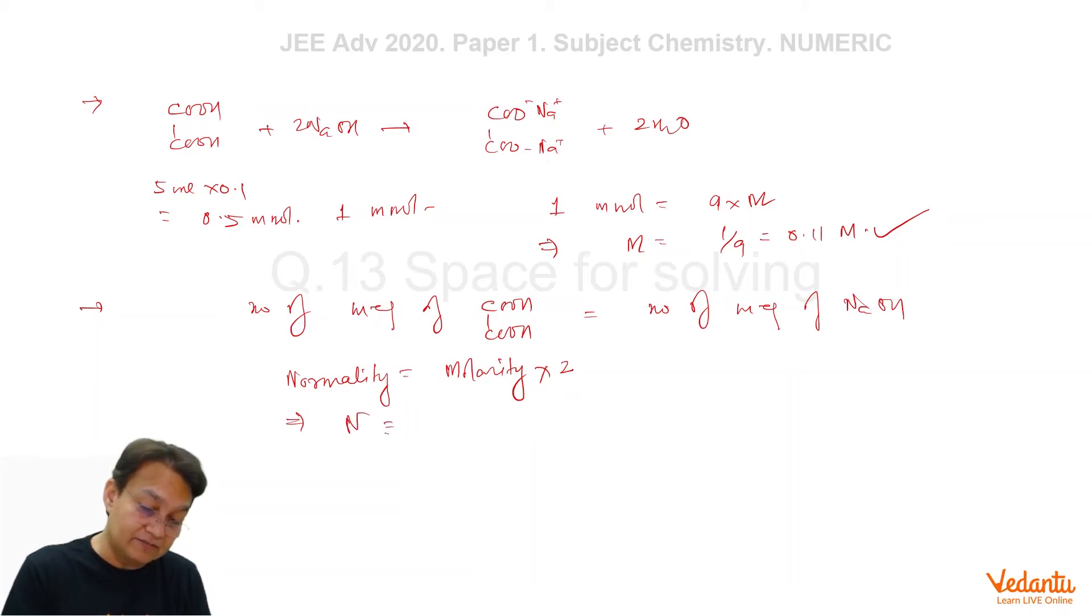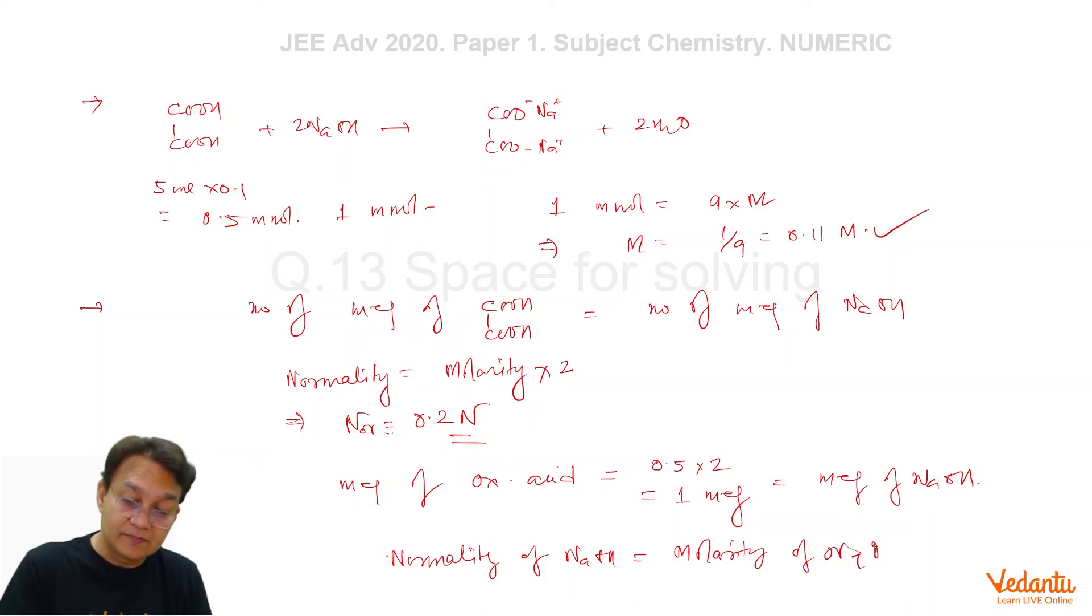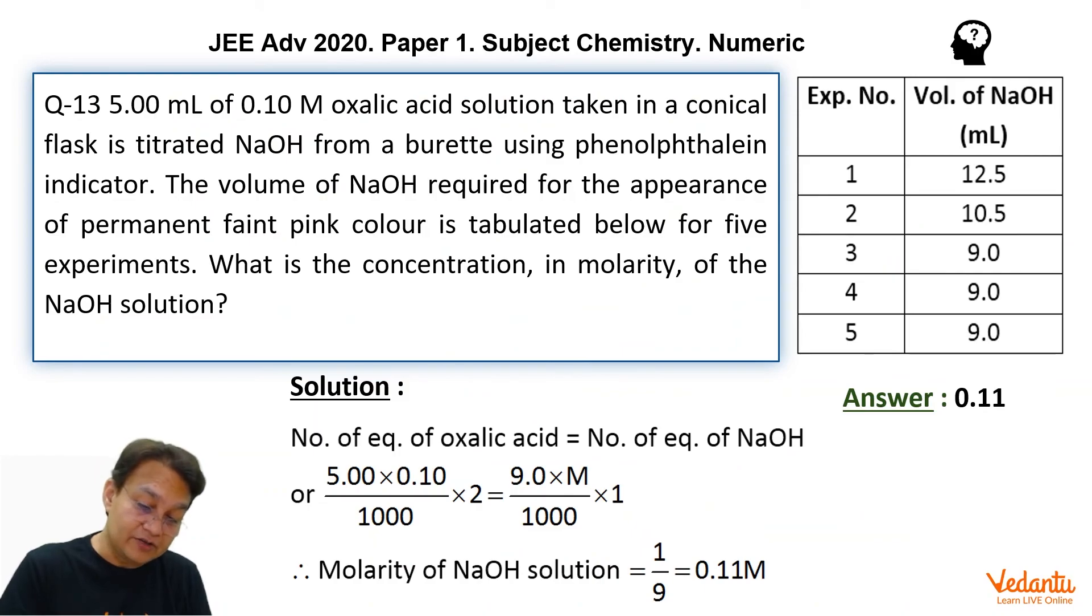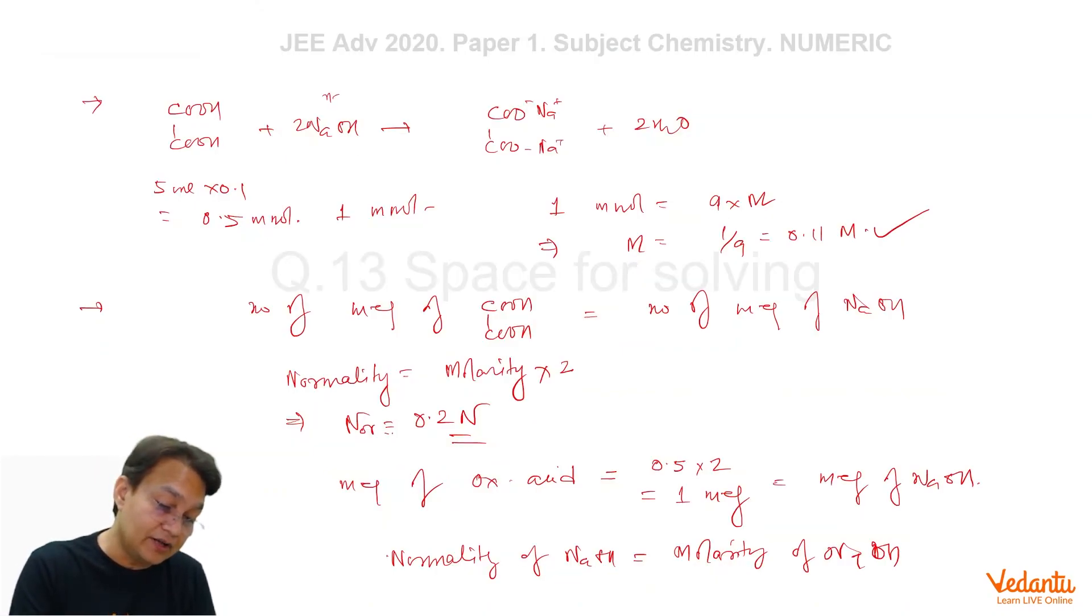So this gives you the normality N equals 0.2 N, normality equals 0.2 N. That means milliequivalent of oxalic acid is equal to 0.5 times 2 equals 1 milliequivalent, and that is equal to milliequivalent of NaOH. And since the normality of NaOH is equal to molarity of NaOH because the N factor of NaOH is equals to 1, see this N factor of this is equals to 1, so you can easily calculate the same result.